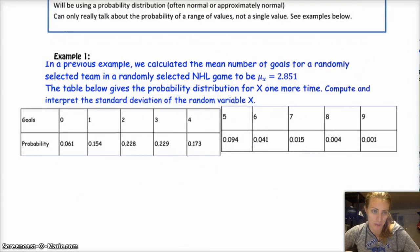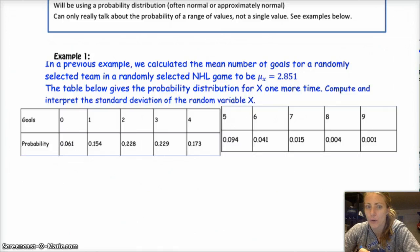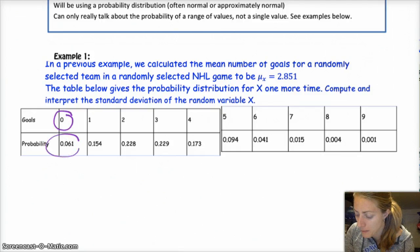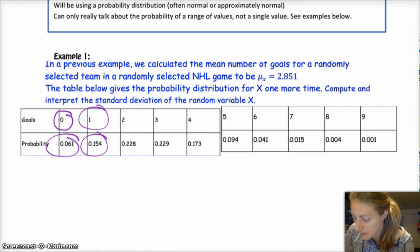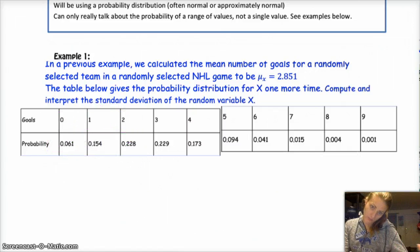So previously we did an example where we calculated the mean number of goals for a randomly selected team in a randomly selected NHL game to be 2.851. And so I've also included the probability distribution for x. And then it says compute and interpret the standard deviation for the random variable x. So you're just going to use the formula from above, and since I already have found the mean, which in case you need a refresher, remember the mean you calculate as the outcome times the probability plus the outcome times the probability plus the outcome times the probability, and then add them all up.